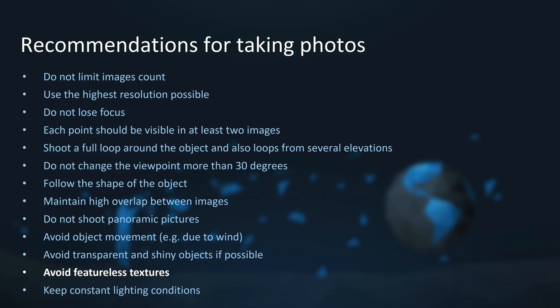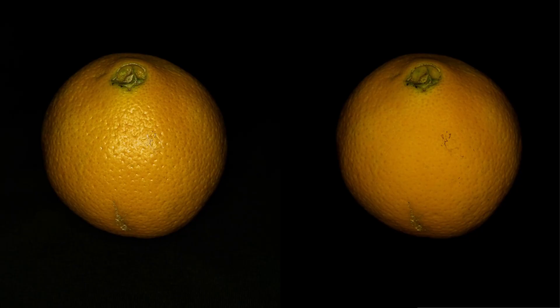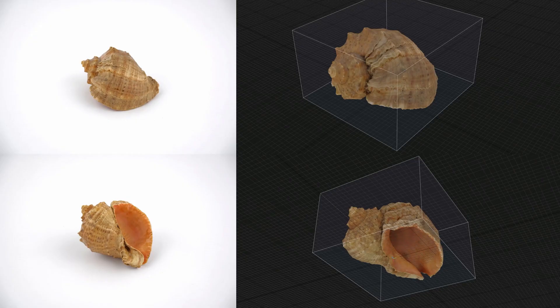The next recommendation is to avoid featureless textures. A featureless texture can be a flat single-color material, and in this case RealityCapture has a problem detecting common features between images. There are tricks for such surfaces — again, two sets of images: one with placed markers or added texture to help alignment, and one set used for texturing. You can also use featureless backgrounds to your advantage: a constant featureless black background means RealityCapture detects features only on the object, like an orange. A seashell on a white background was also successfully reconstructed with a static camera on a tripod — only the seashell was rotated manually. You can even use a turntable.